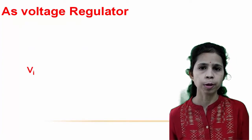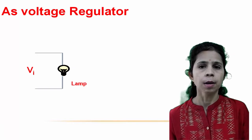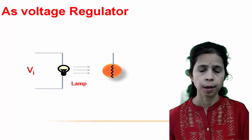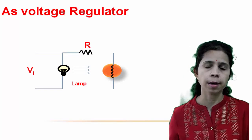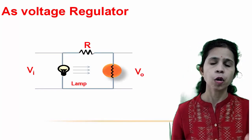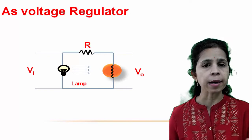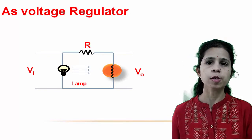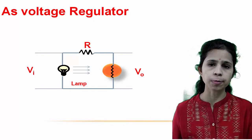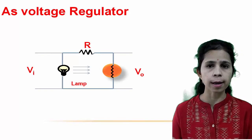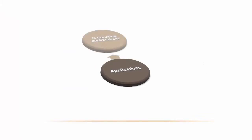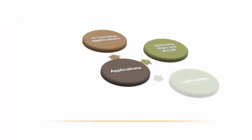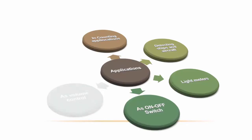A photocell can be used for voltage regulation: input voltage drives a lamp whose light falls on the photocell connected to a resistor and external supply. When input voltage decreases, lamp brightness decreases, the photocell resistance increases, and the output voltage is maintained constant. Applications of photoconductive cells include counting applications, detecting ships and aircraft, light meters, on-off switches, volume control, and voltage regulators.